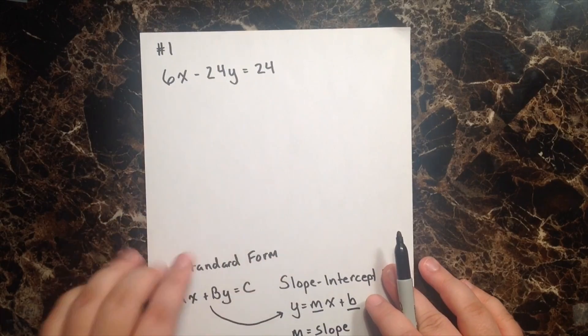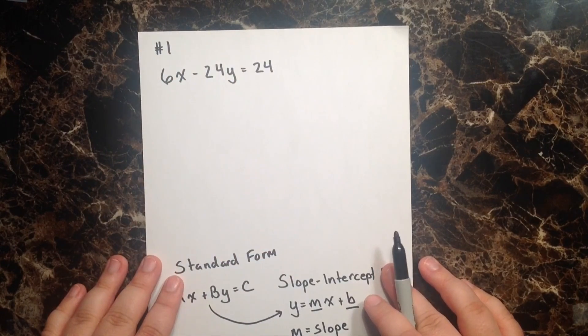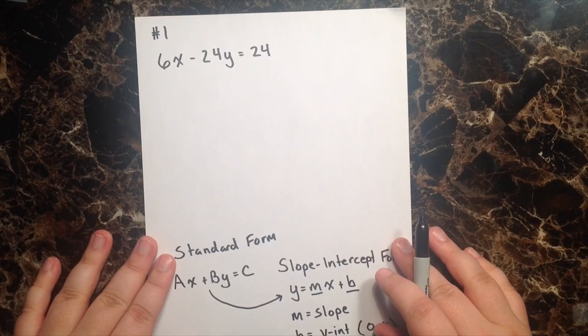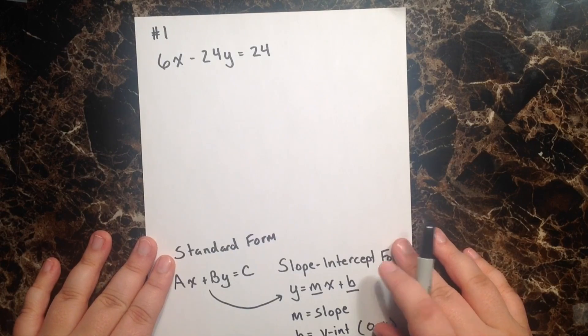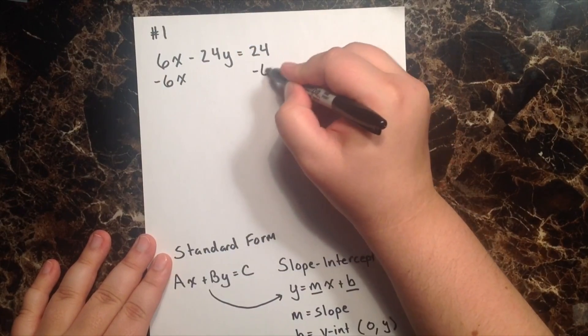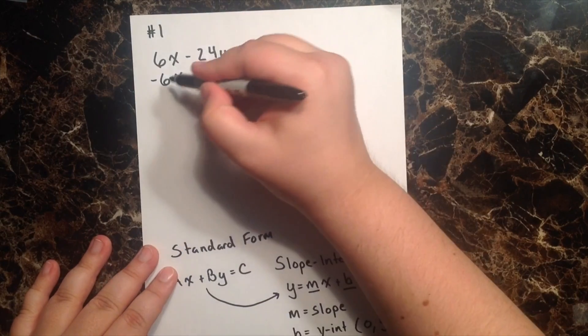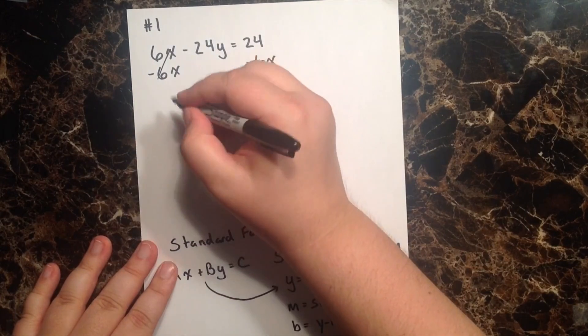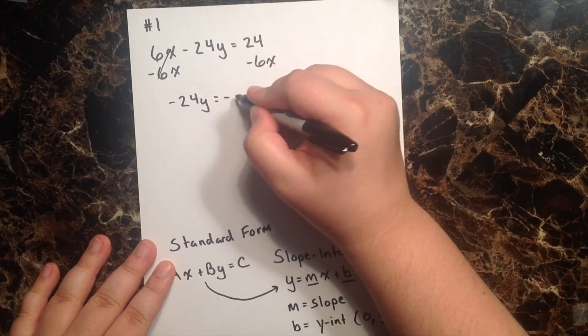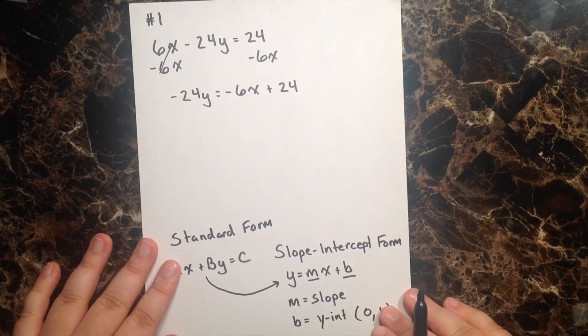So if I go back to my original equation, right now I have my x term combined on the same side as my y. And I can't have that according to y equals mx plus b. So let's go ahead and start solving this equation for y. The first thing I'm going to do is bring my 6x over by subtracting it from both sides. And when I do that, of course, it goes away on the left.